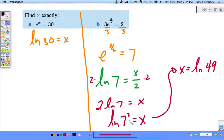The best way to write this answer is x equals natural log of 49, because that's 7 squared. Look how nice this is—solving for a variable in an exponent. This is amazing.